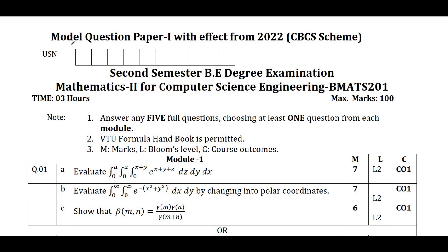Hello my dear students, I welcome you all for SVK tutorials. In this video I am going to discuss the model question paper pattern for the 2022 scheme of second semester BE degree examination for the subject code BMATS201, which is only for the computer science engineering stream. The question paper contains five full questions; you need to choose at least one question from each module and answer.